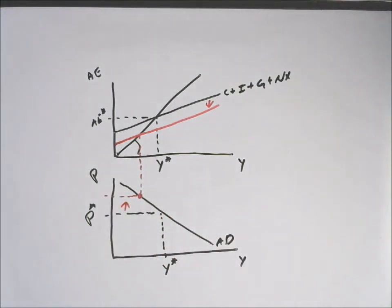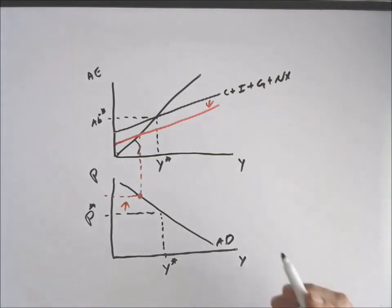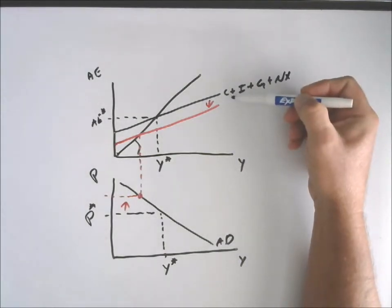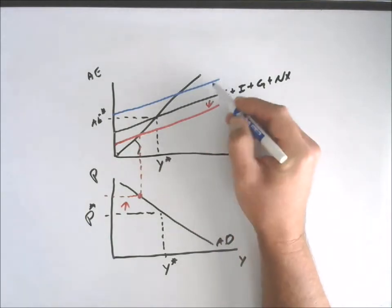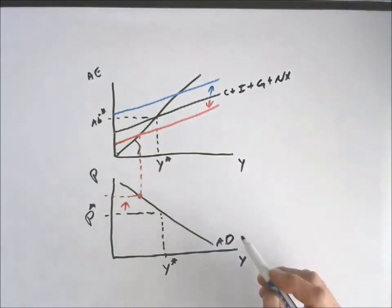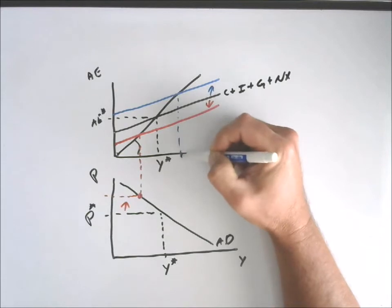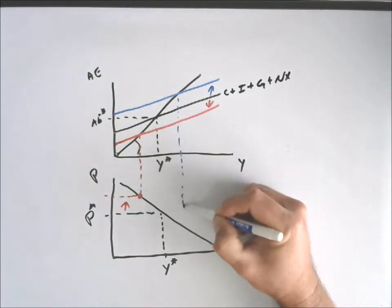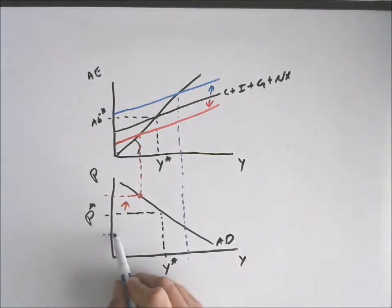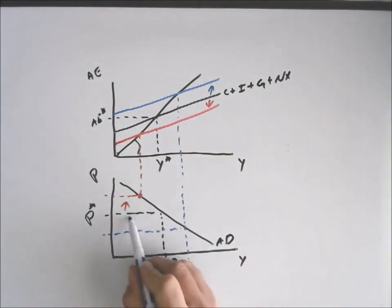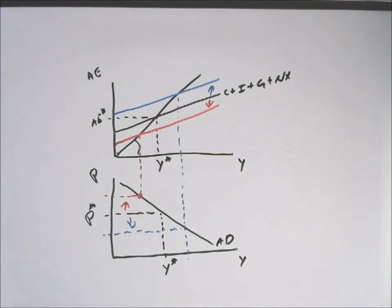On the flip side, if you decrease prices, well, you can buy more stuff—consumption goes up. In other words, GDP rises as prices fall. And so you can see now how easy it is to map this aggregate expenditures model over to aggregate demand.